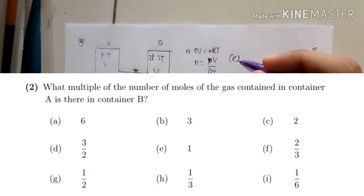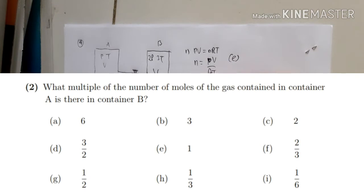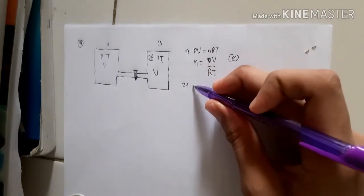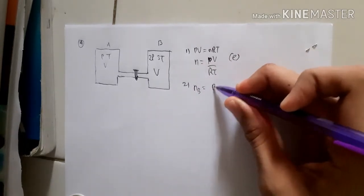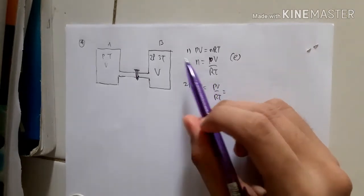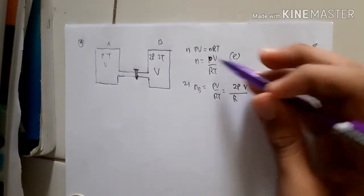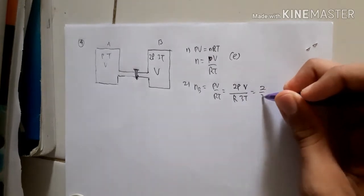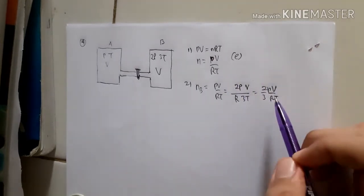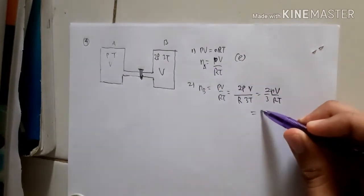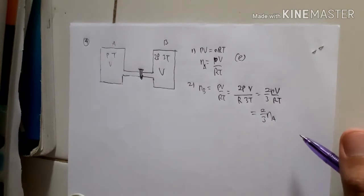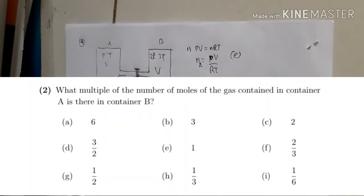For number two, we find what multiple of the moles in container A is present in container B. The moles in container B use n = PV/RT, but here P is 2P, volume is V, and temperature is 3T, giving (2/3)(PV/RT). Since PV/RT is the moles in container A, the ratio is 2/3, so the answer is option F.